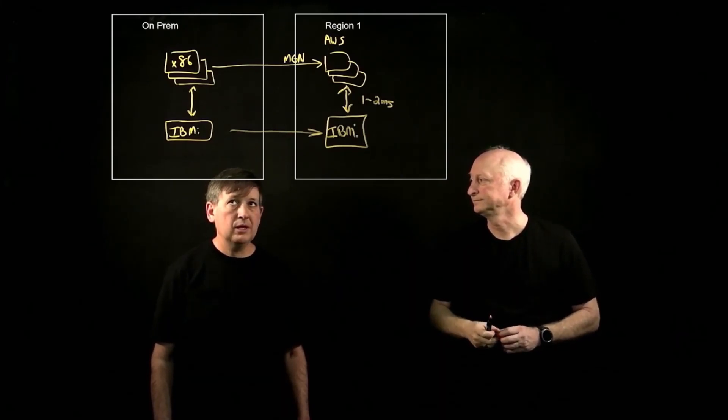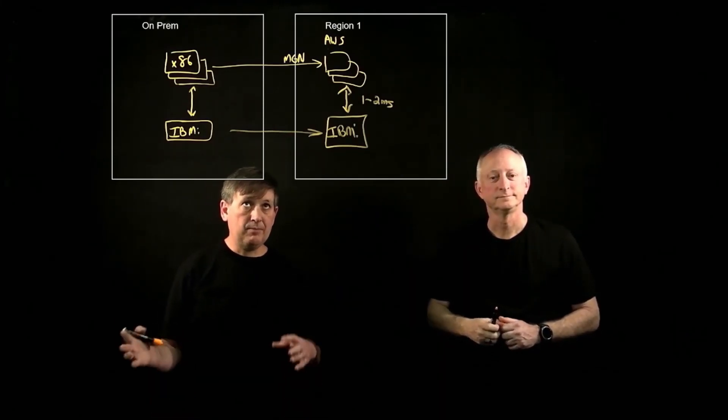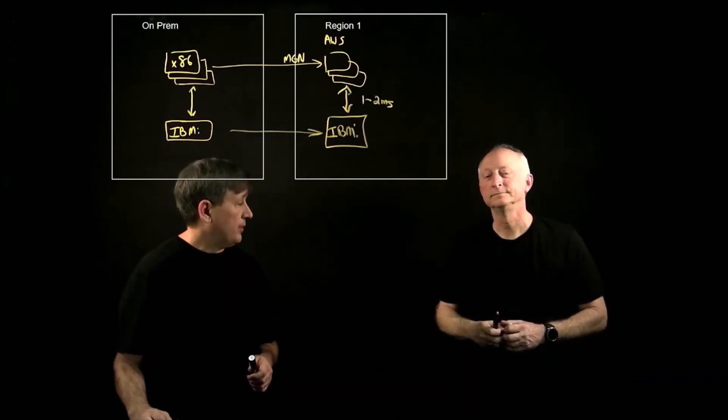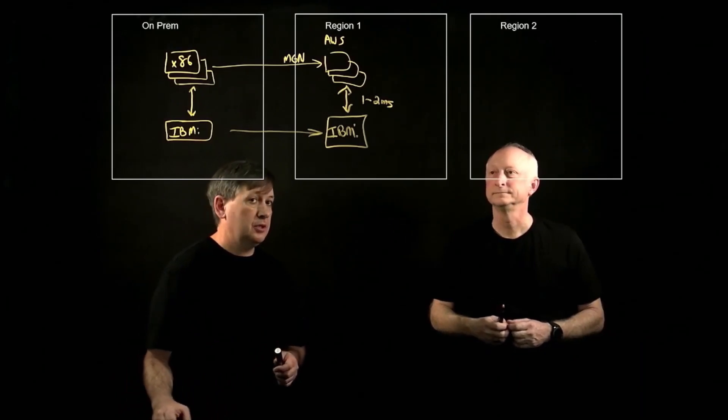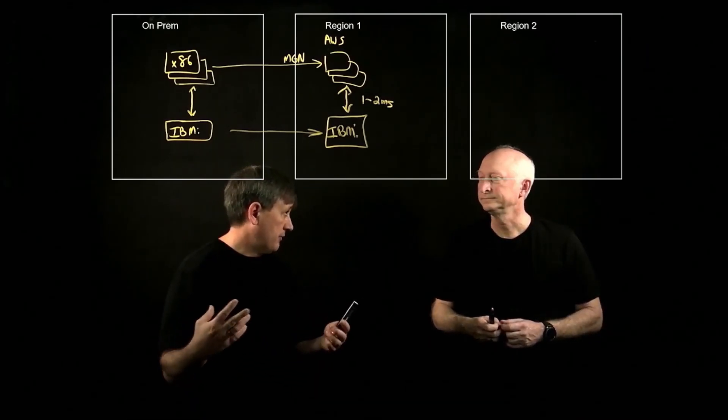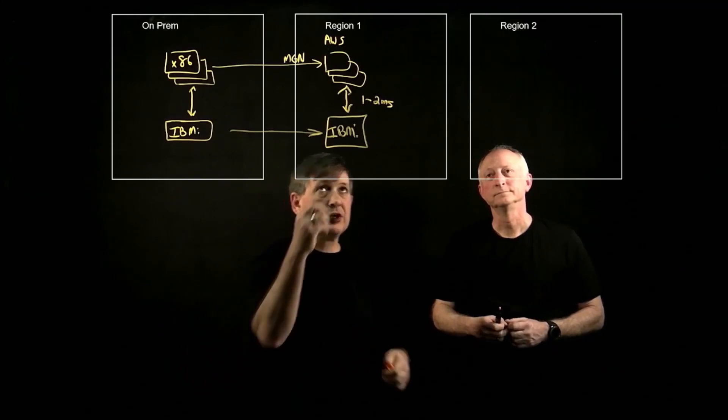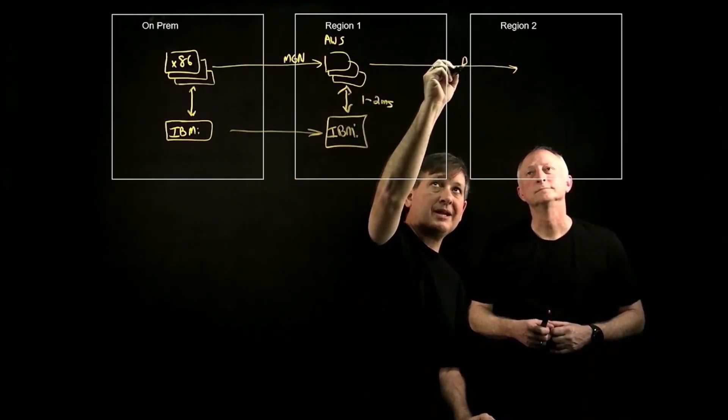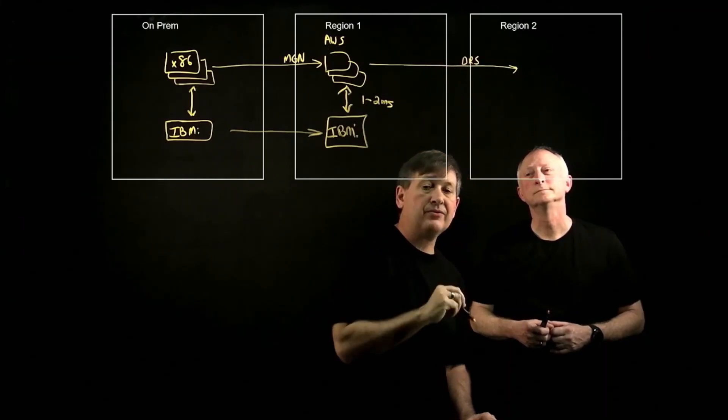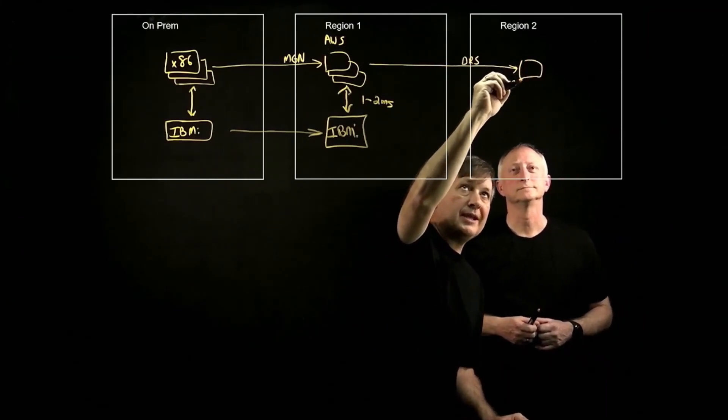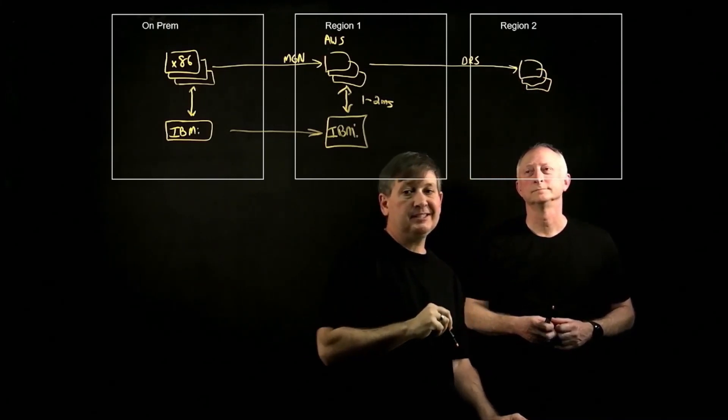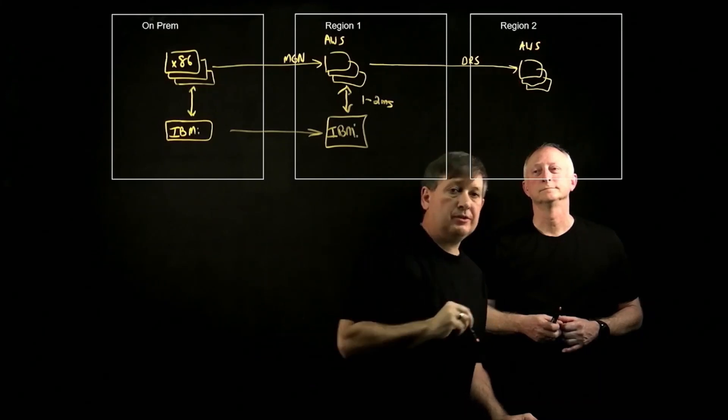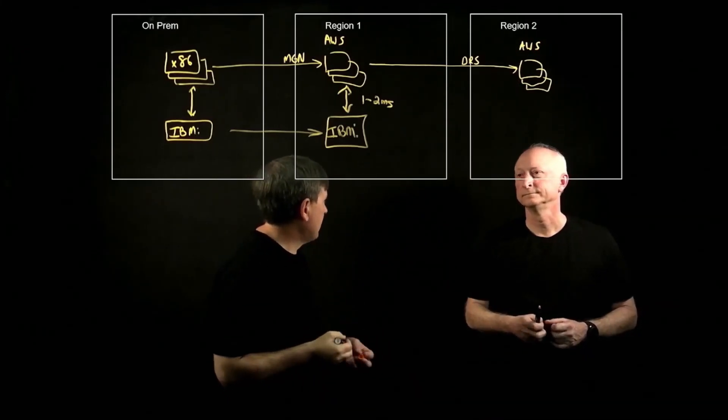Wow. That sounds like a pretty workable solution. But I got another one for you, which is we need DR for this solution. The way I would handle DR in a traditional AWS architecture is I would use my AWS DRS service, my Amazon Elastic Disaster Recovery, to replicate my x86, my EC2 instances to my second AWS region. How do I do that in the hybrid cloud solution?